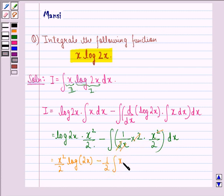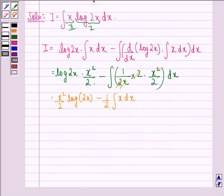This is equal to x square by 2 log 2x minus 1 by 2 into integral of x dx, which is x square by 2 plus a constant c.